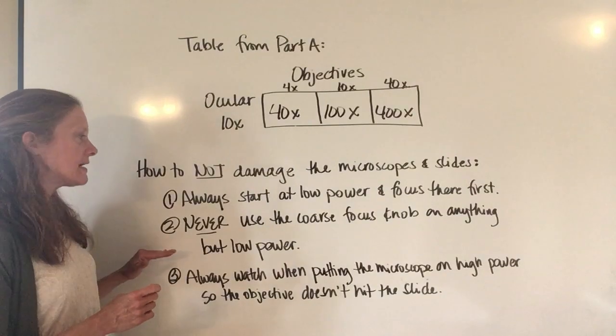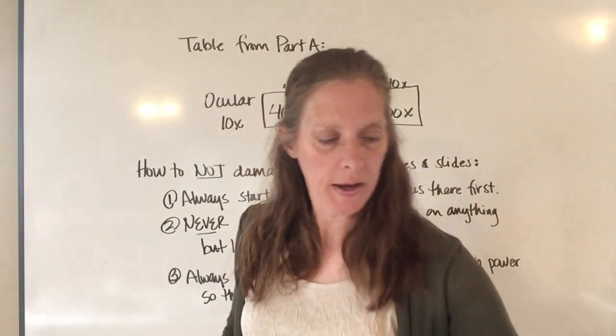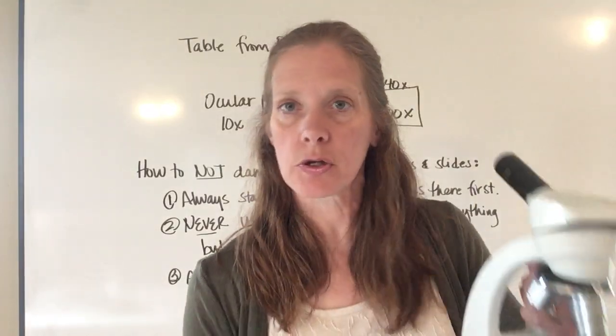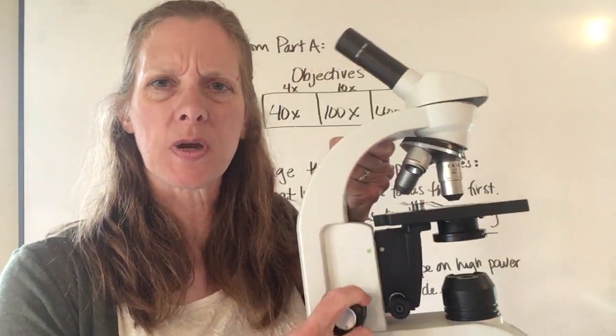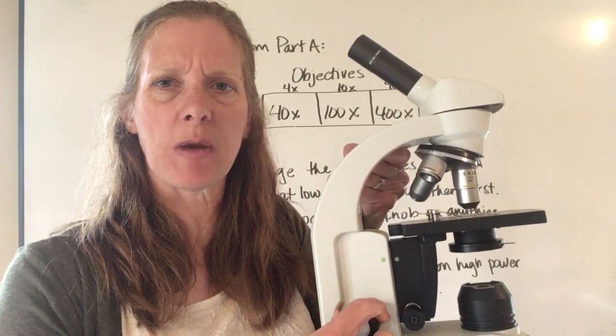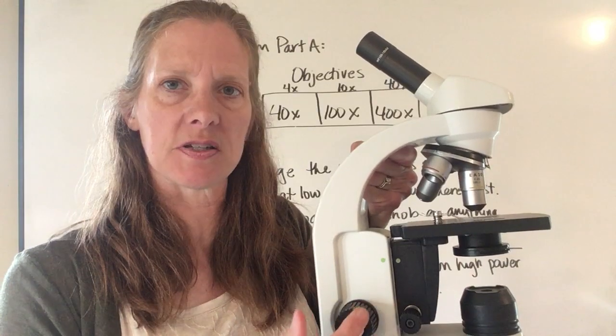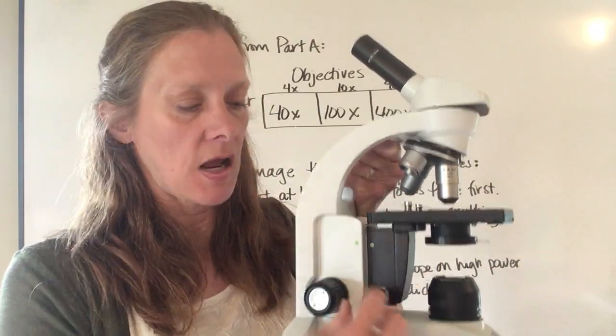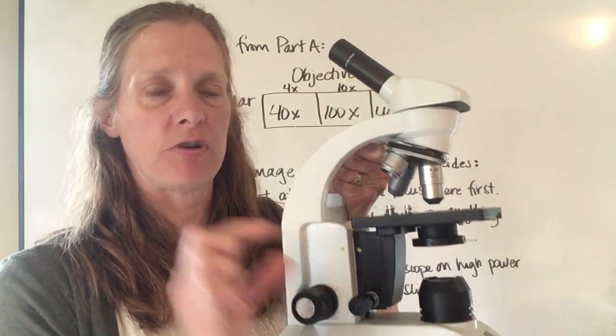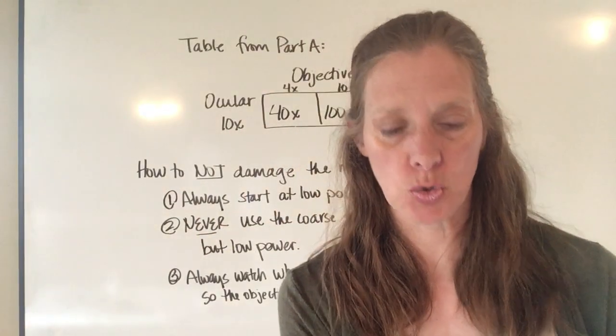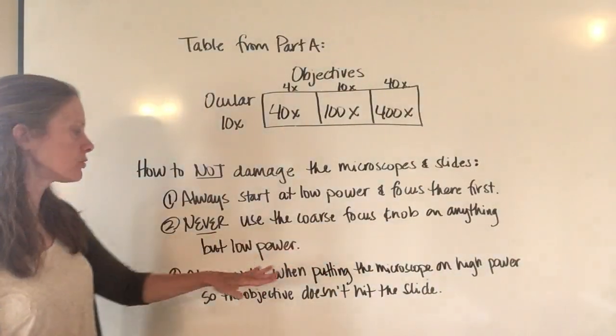Secondly, there are two focusing knobs. I can show you on my microscope; they may look different on yours. The coarse focus knob—you can see the stage move up and down. If I hold this still, you can see my stage moving as I turn this because it moves the stage a lot. The fine focus knob, if I turn it, you really can't see the stage moving because it moves such a minuscule amount.